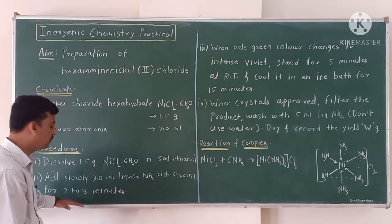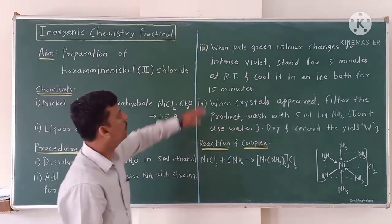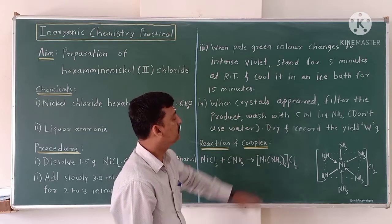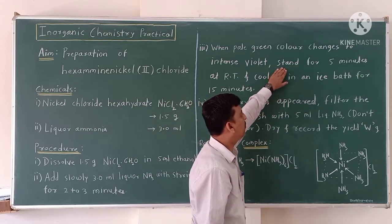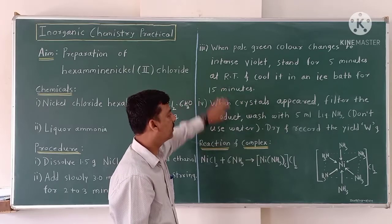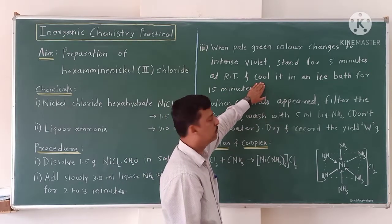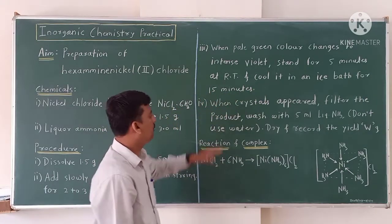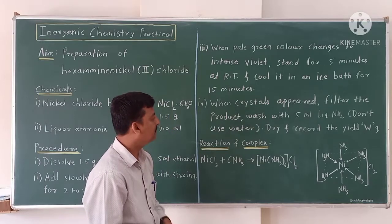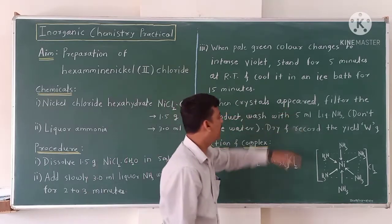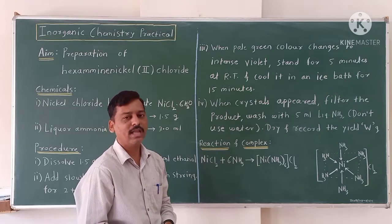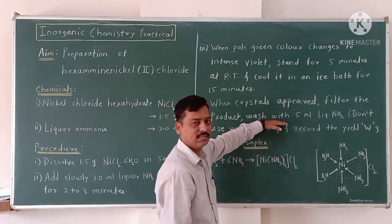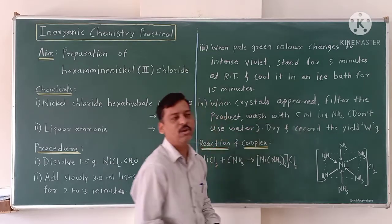After addition with constant stirring, keep for two to three minutes. When the pale green color changes to an intense violet color, stand the solution for five minutes at room temperature. Now cool this solution in an ice bath for 15 minutes. When crystals appear, filter the product. If crystals are not appearing, scratch by means of a glass rod and wash your crystals with a small volume of liquor ammonia.